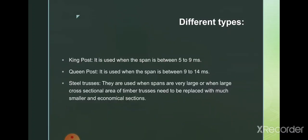Queen post is used when the span is larger, between nine to fourteen meters. So for smaller spans we use king post and for larger spans we use queen post. Steel roof trusses are used when the span is even larger than this.